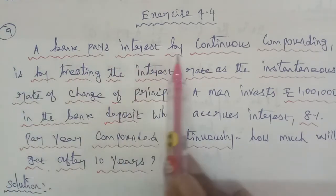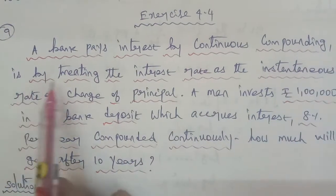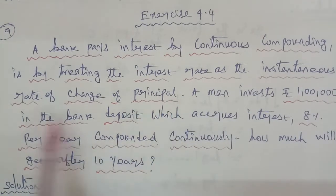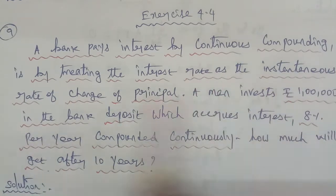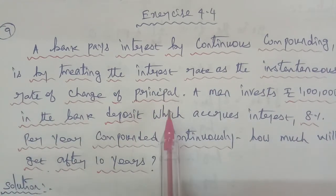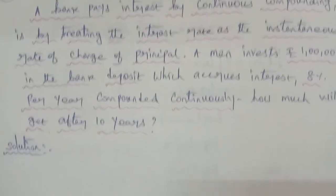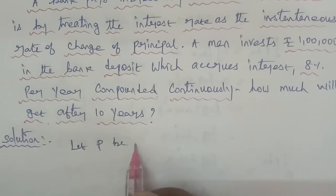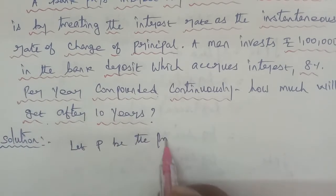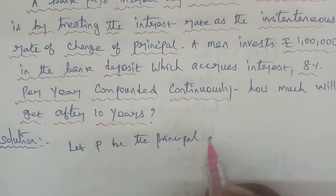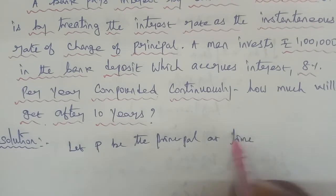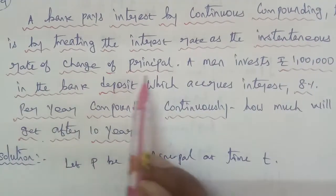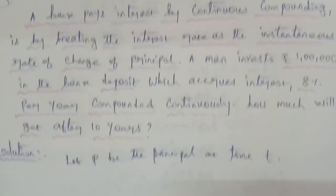Question 1. A bank pays interest by continuous compounding, that is by treating the interest rate as the incidence rate of change of principle. The incidence rate of change of principle is dP/dt. So first of all, let P be the principle at time t.